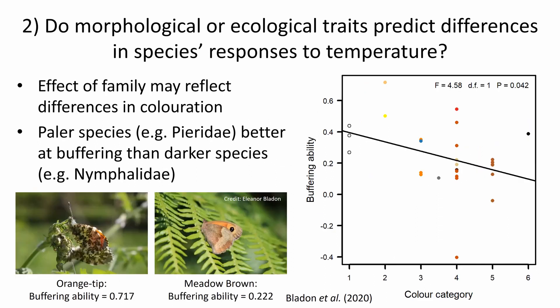This difference between families also appeared to reflect something to do with butterfly coloration — paler species, such as the whites in particular, tended to have better buffering ability than darker species. This is something we're looking into with some follow-up work using museum specimens to look at the difference in luminance of the species and see whether that gives us any more indication of what's going on. It seems to make sense conceptually in that paler species potentially have more options to control their body temperature — being highly reflective, they can potentially absorb but also lose heat more easily than darker species.